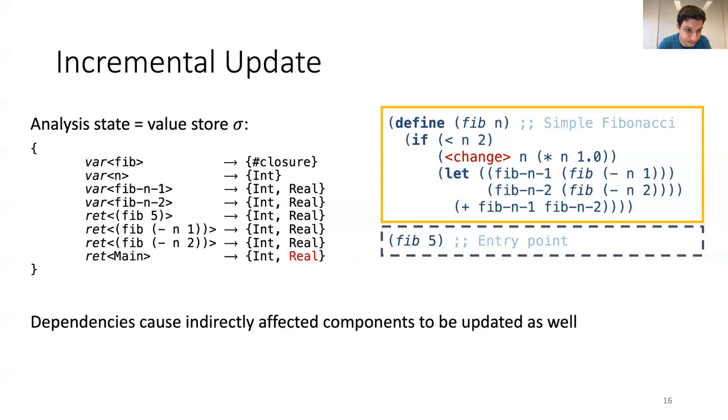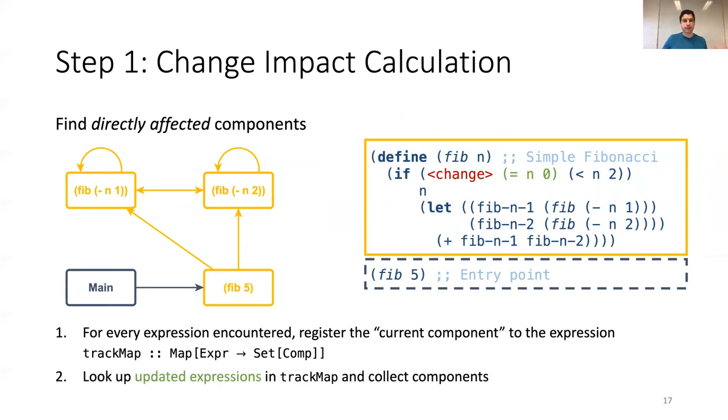So, let's say this a bit more formally. So, there are two steps. In step one, there needs to be a change impact calculation, where the analysis has to compute the directly affected components. To do so, during the analysis of a component, the analysis will have to track which expressions are encountered there. And then, when an expression is changed, we can look up the expressions in, for example, in a map, and find the directly affected components.